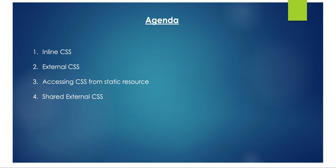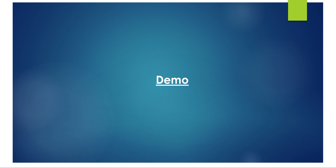Just a recap of my last video: we talked about templates, how we create markup using the template tag, conditional rendering, and iteration — basically how we render the markup. Today we'll be talking about adding styling to that markup. There's not much theory here, so let's directly move to the demo.